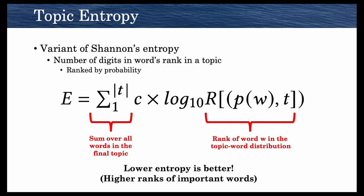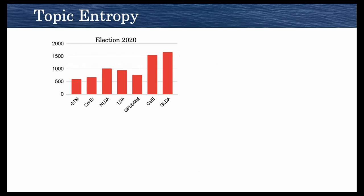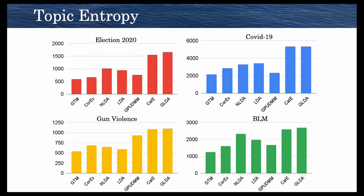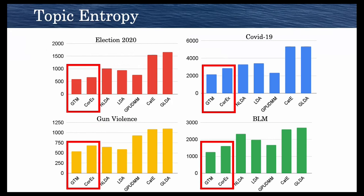Let's look at topic entropy for the election 2020 dataset. As we can see, GTM and CoreX are lower. And for the other datasets, COVID-19, gun violence, and BLM, we see the same thing. So GTM and CoreX are by far the best on average overall, but GTM beats CoreX pretty consistently.